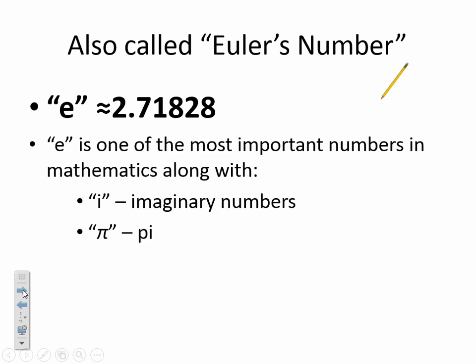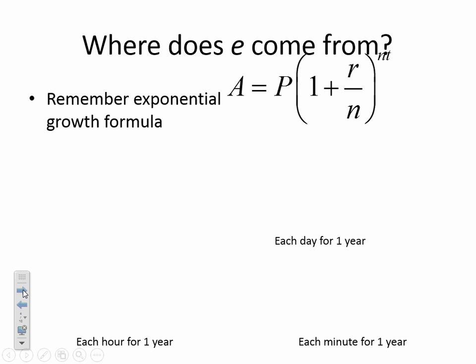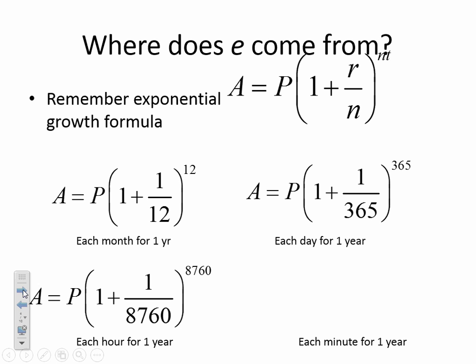Now this next slide, please don't write down. This is where E comes from. Remember back a few days ago, we were talking about exponential growth, and this is our formula for exponential growth. We can do by 1 year, by 1 month, by a day, by an hour, by a minute. When we talk about E, that's going down to every second. So we're growing over every second.